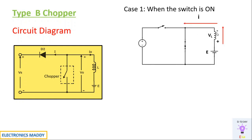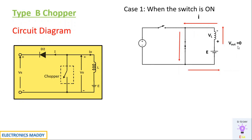The current flows through this path. If you carefully observe, minus appears at this point — minus appears at the anode. Looking at the circuit from the other end, plus is directly connected to the cathode, so this diode will be reverse biased. Hence it acts as an open circuit, so all the current flows through this particular path and no current flows through the diode.